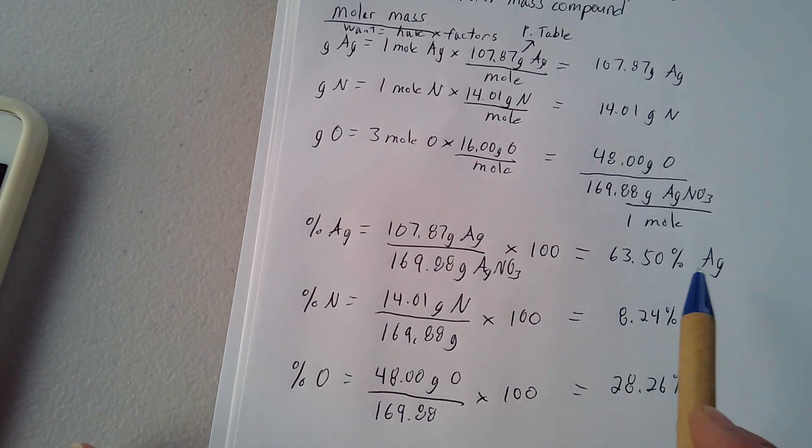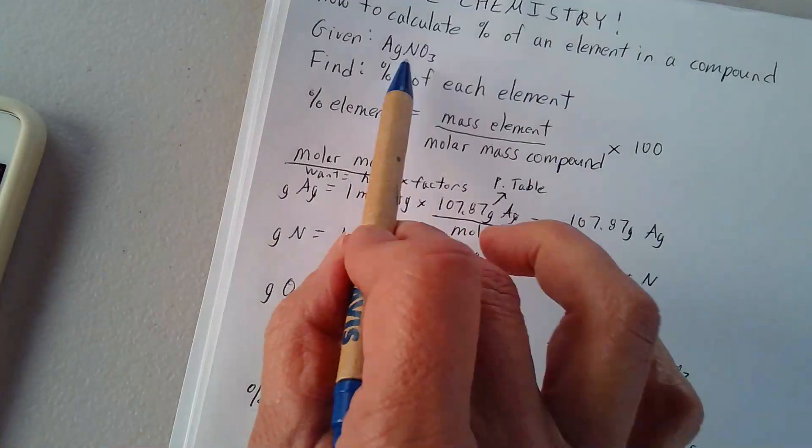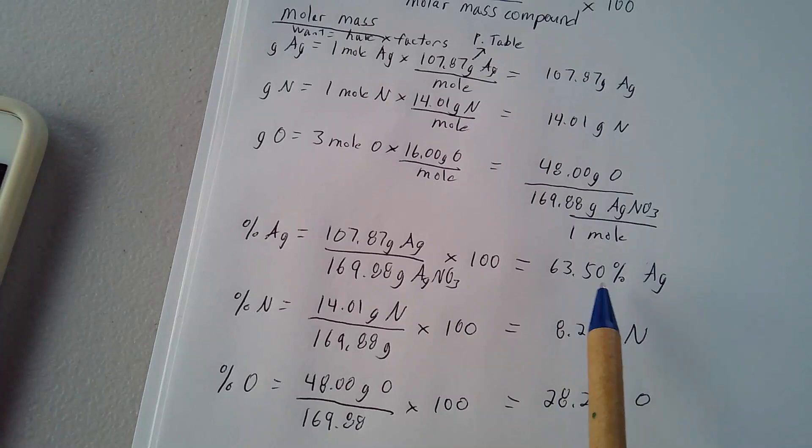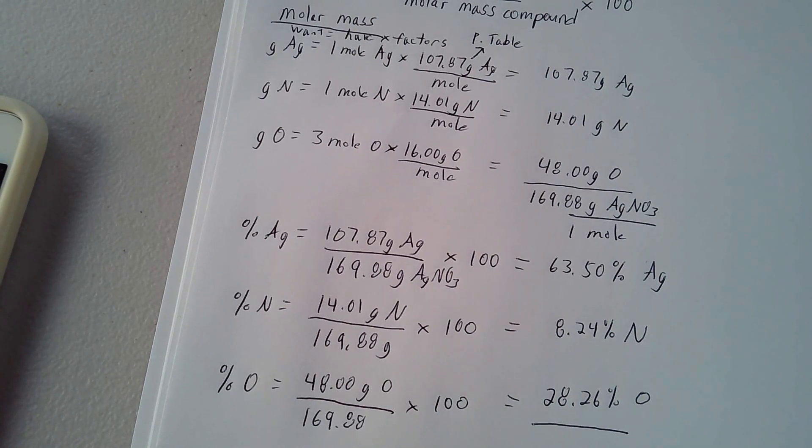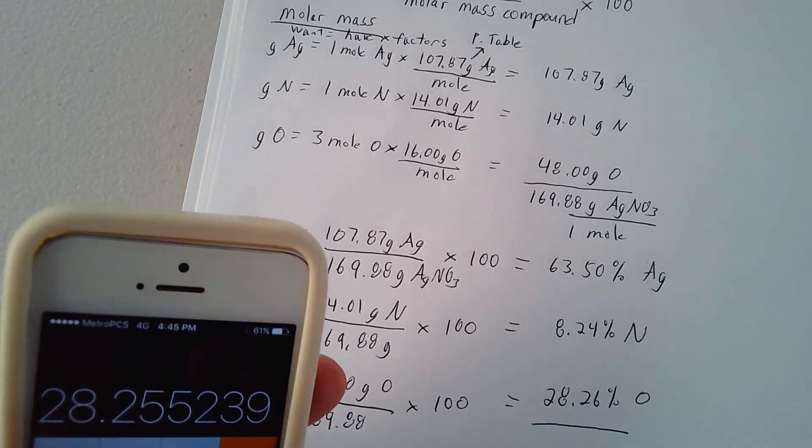So there are the percentages for silver, nitrogen, and oxygen in the compound silver nitrate. To double check your answer, as you know, the percentages should all add up to what number? Yep, 100%. Let's test it out.